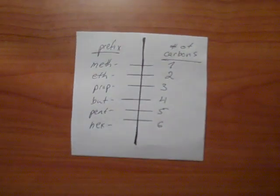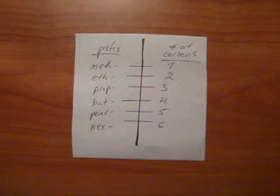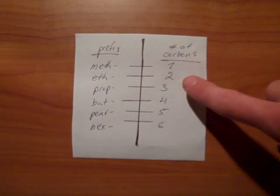These are the prefixes used in naming hydrocarbons. Meth, eth, prop, etc. Notice that the number of carbons increases by one with each prefix.